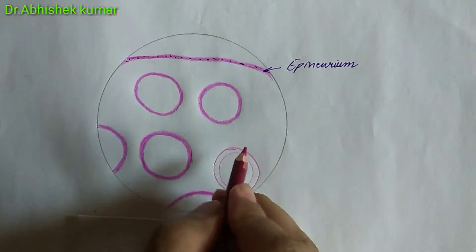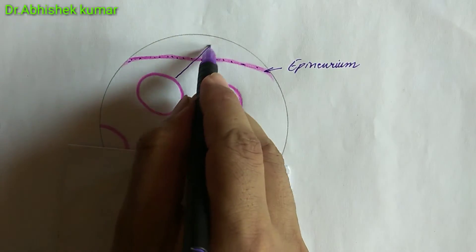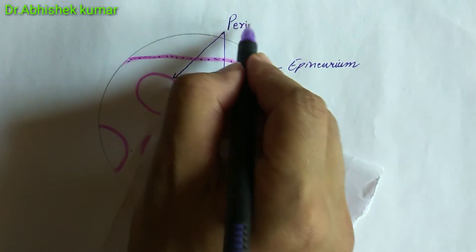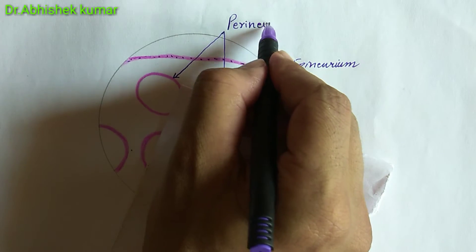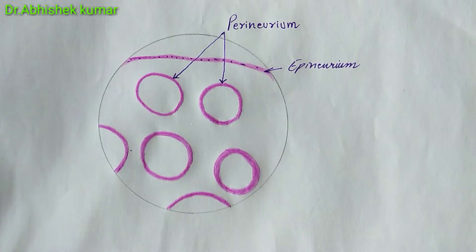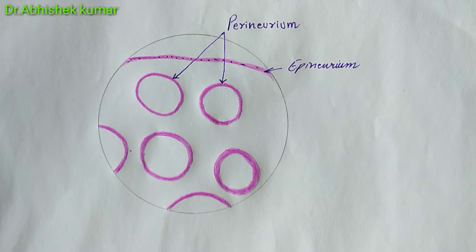Here the round structure is a thin connective tissue layer consisting of specialized cells called the perineurium. We label all these round structures as perineurium. The perineurium is a thin connective tissue layer that extends into the nerve, subdividing and surrounding one or more individual nerve fascicles.